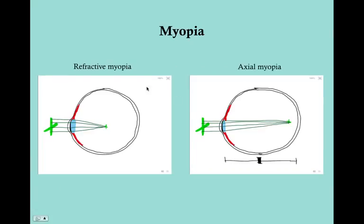Here are examples showing refractive myopia, where the lens is too convex and projects the image in front of the retina, and axial myopia, where the eyeball is too long. Even though the lens would project correctly for a normal-length eye, the retina is behind the projection point, resulting in a distorted image.